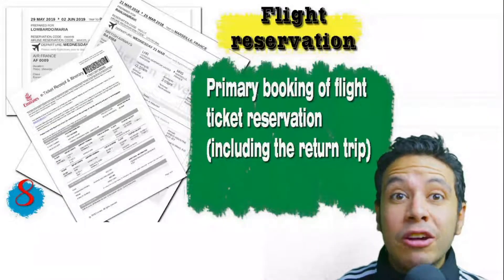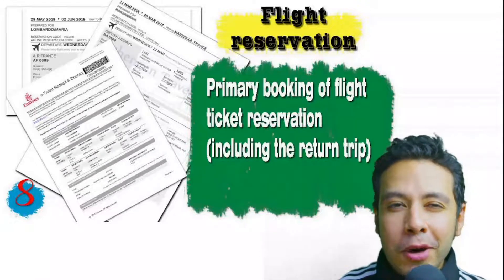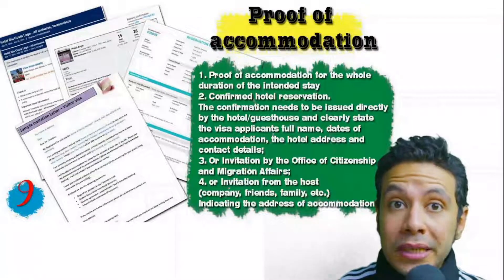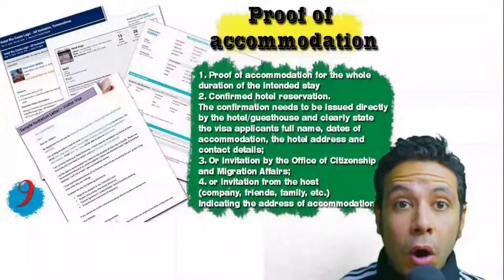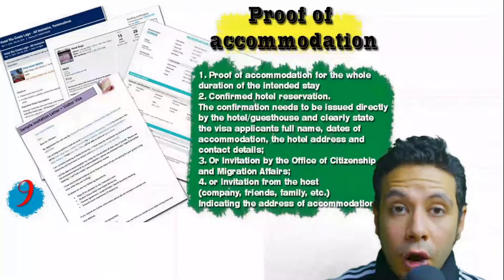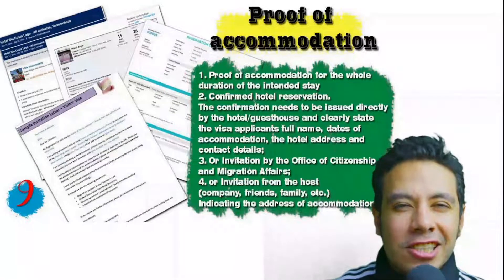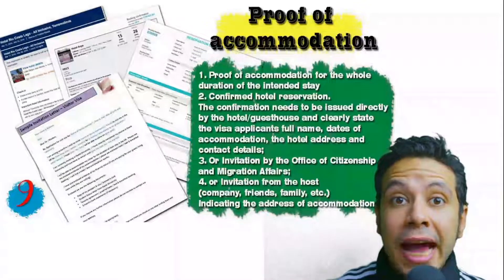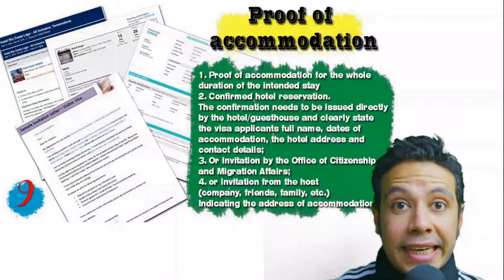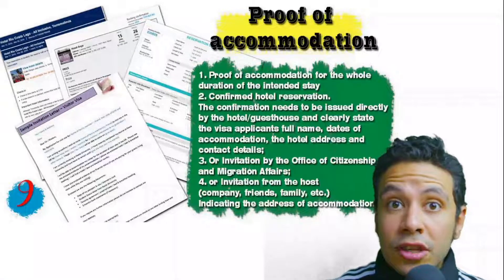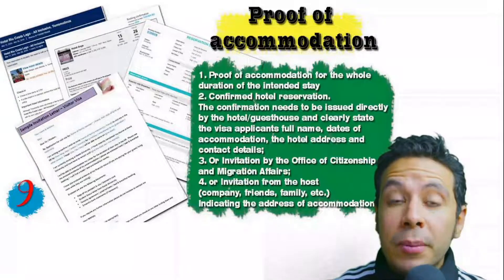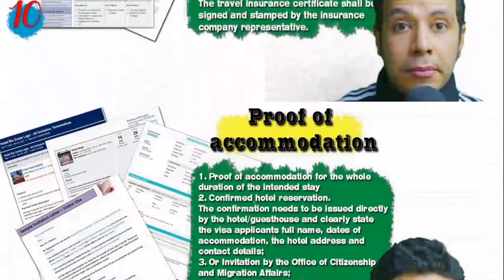You should also provide a flight reservation — an initial booking is usually fine, but in some cases a confirmed booking is needed, and this reservation must include a return ticket. You will also need to provide proof of accommodation — a confirmed hotel reservation, an invitation from a host, or an invitation from an organization. For a hotel or hostel, an initial booking is acceptable, though in some cases a confirmed booking may be required. The hotel name, address, and contact number must be mentioned. If invited by a person, the invitation letter should be mailed directly to the embassy or submitted by you along with a copy of the inviting person's passport.